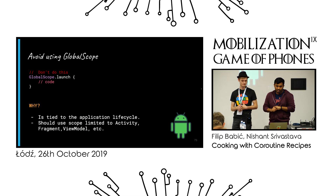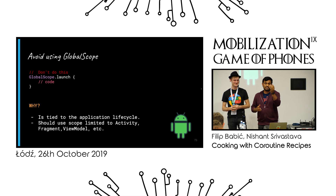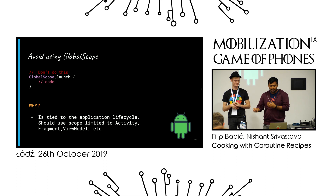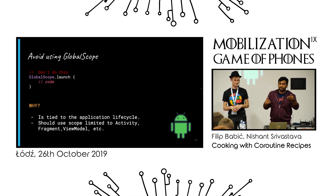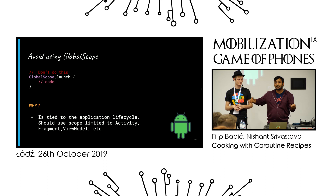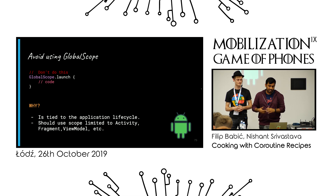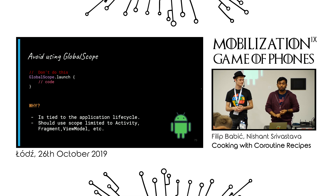Don't use GlobalScope.launch — it's bad. GlobalScope represents the whole application lifecycle. On a JVM it runs for the lifecycle of the program; on Android, it runs for the lifecycle of the application. If you start a coroutine in your activity using GlobalScope, the activity is destroyed, but the coroutine tries to reference the activity again — maybe update the view — and it can't because the activity is gone, but the coroutine is still running on the application lifecycle.